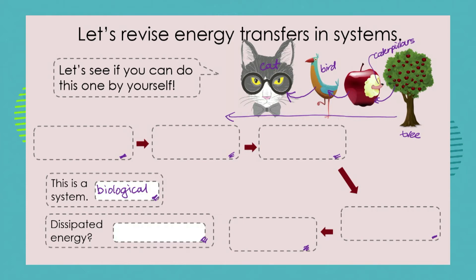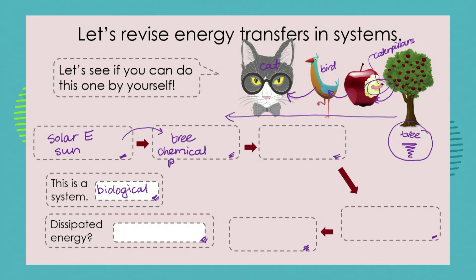Where is the source of energy for the tree? Where does the energy come from to allow the tree to grow and produce its apples? We have solar energy — energy from the sun — and that energy is transferred to the tree. The tree stores its energy as chemical potential energy inside the apple. The caterpillar comes along and eats the apple, so that chemical potential energy is transferred to the caterpillar.